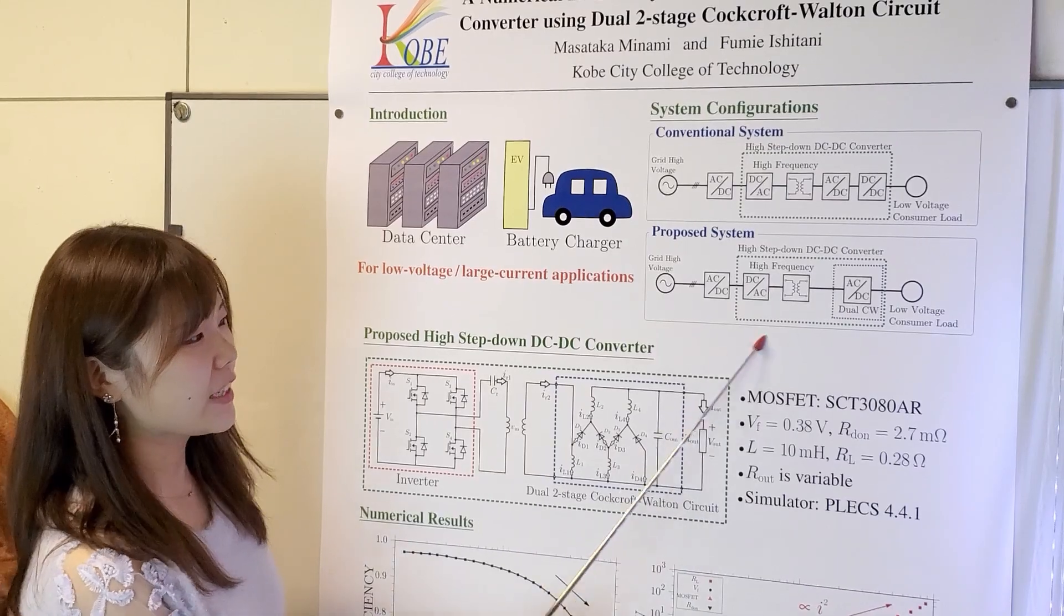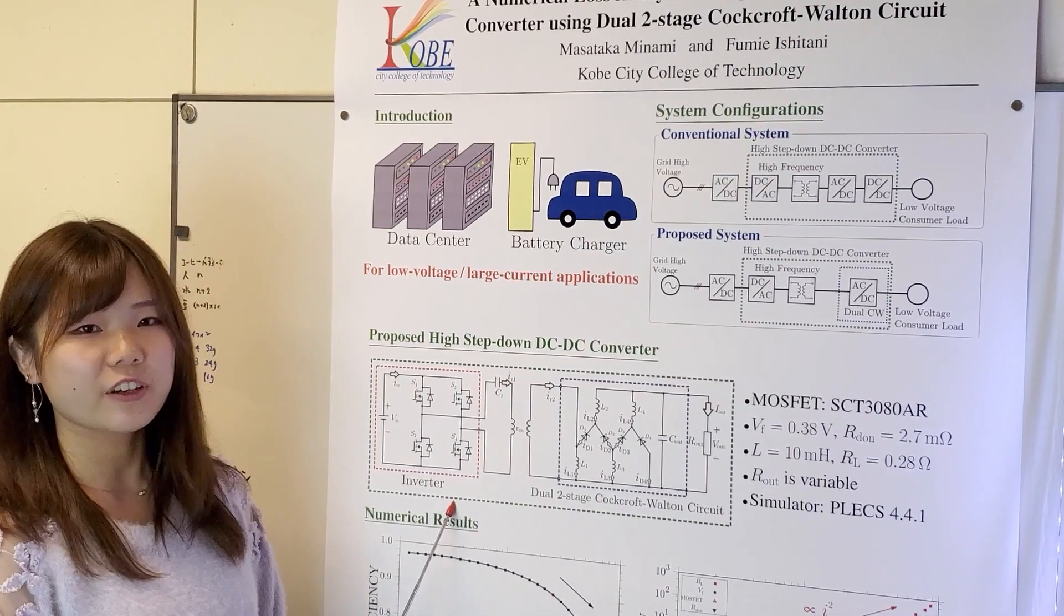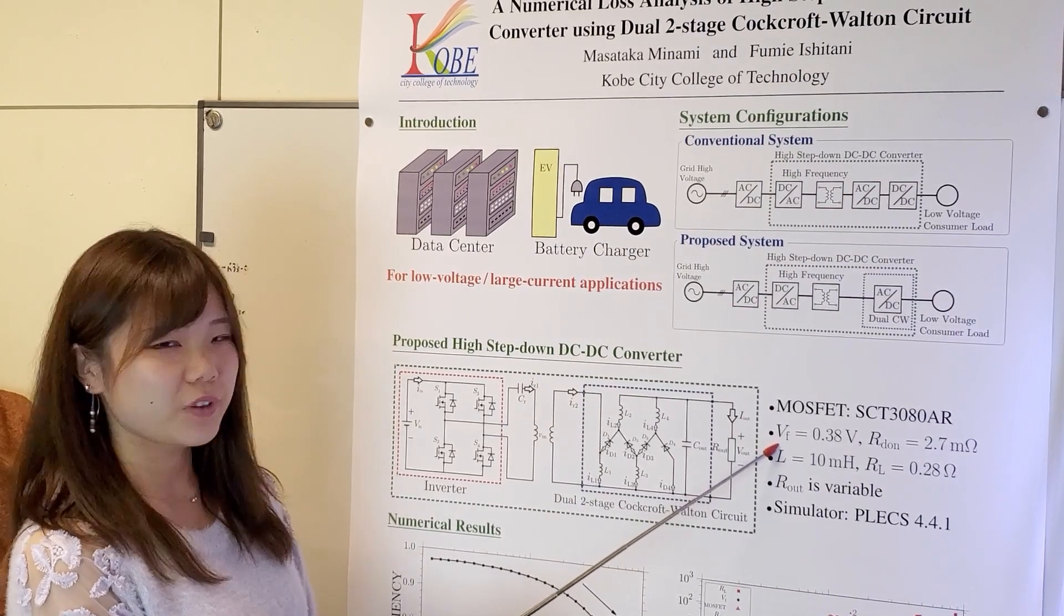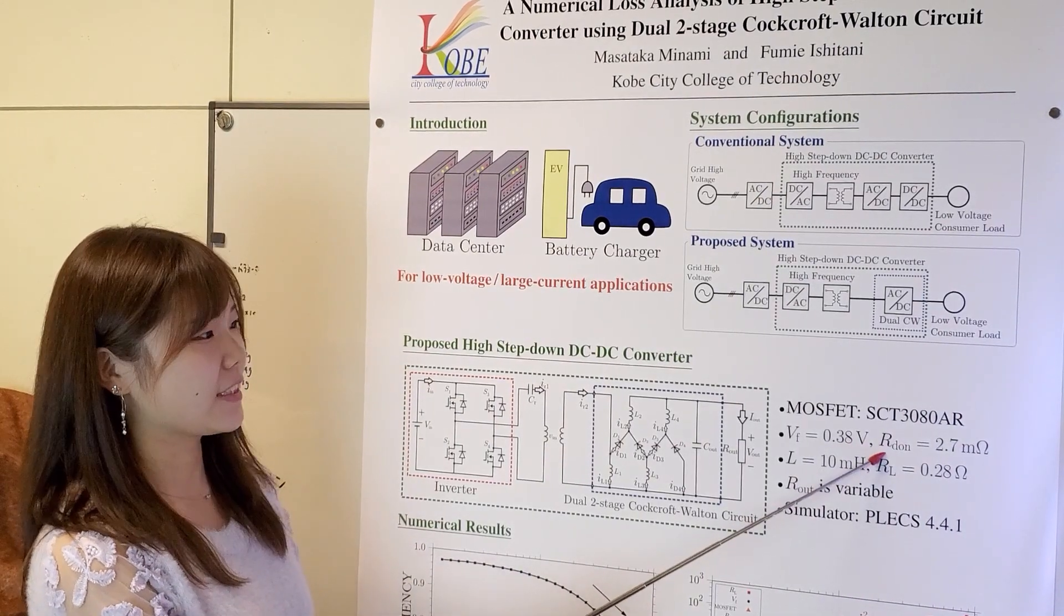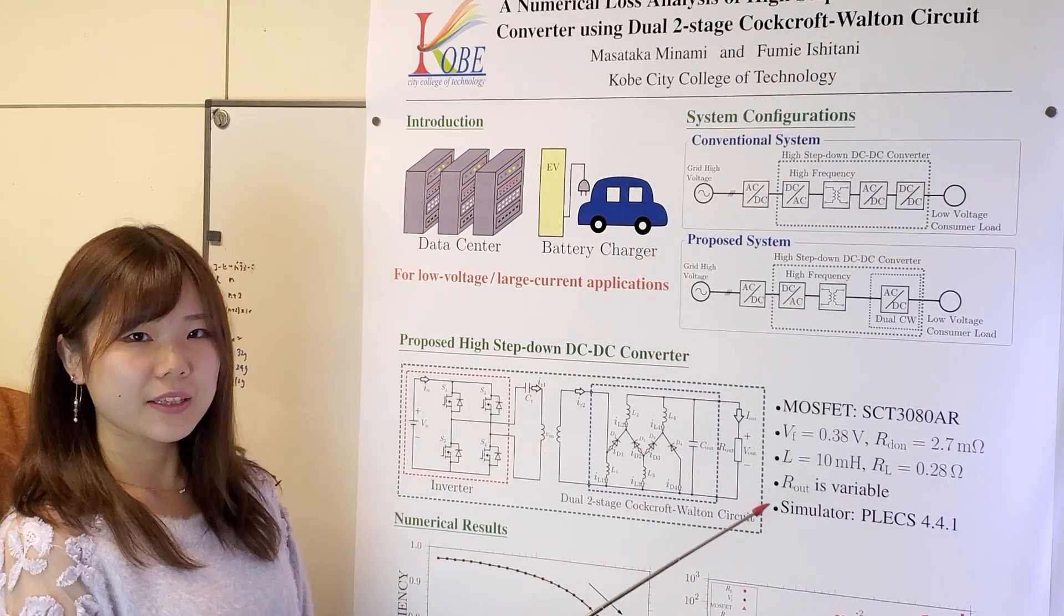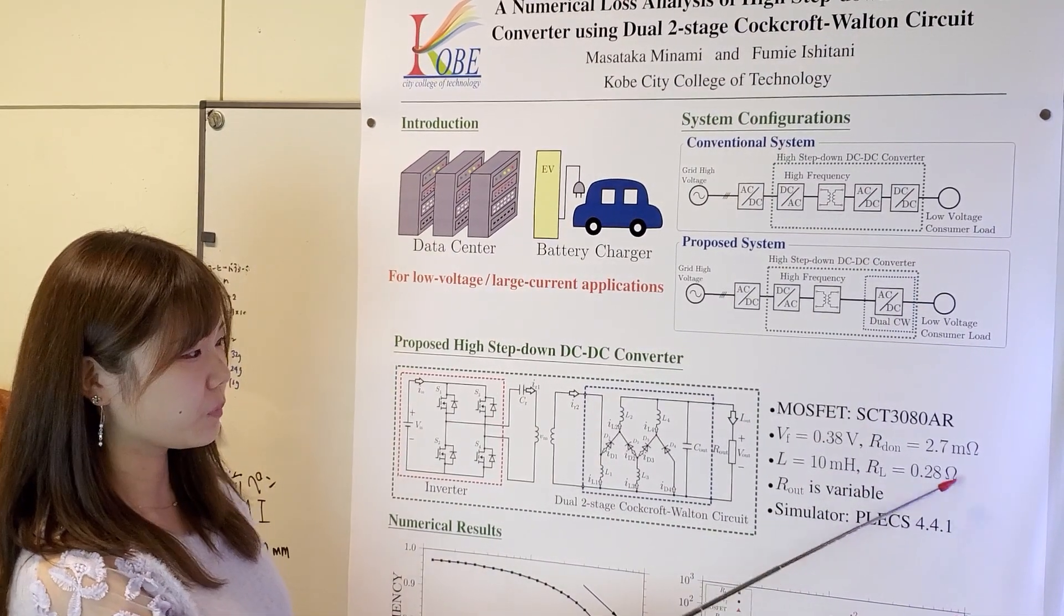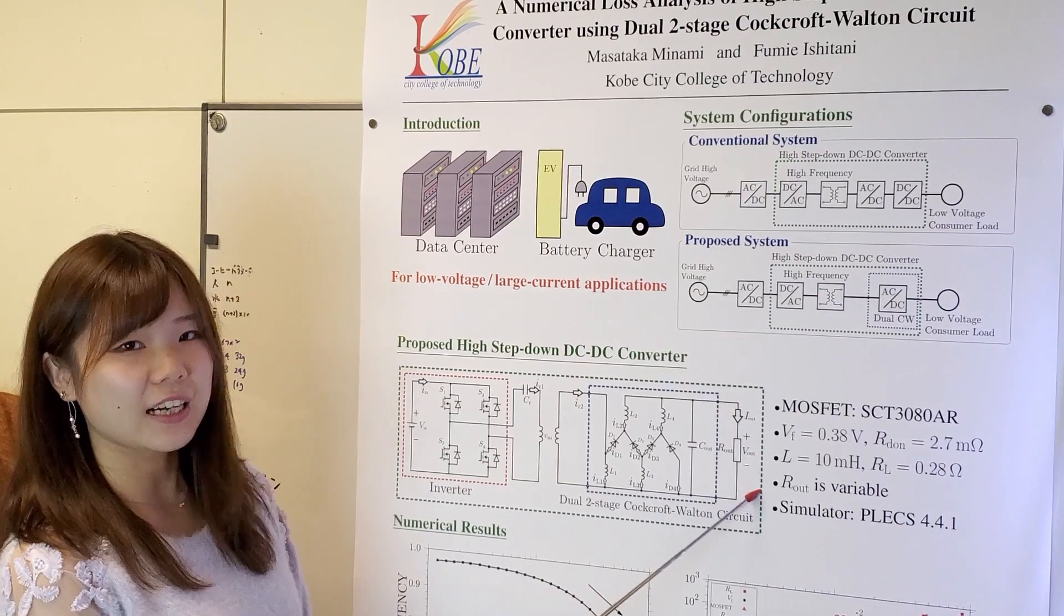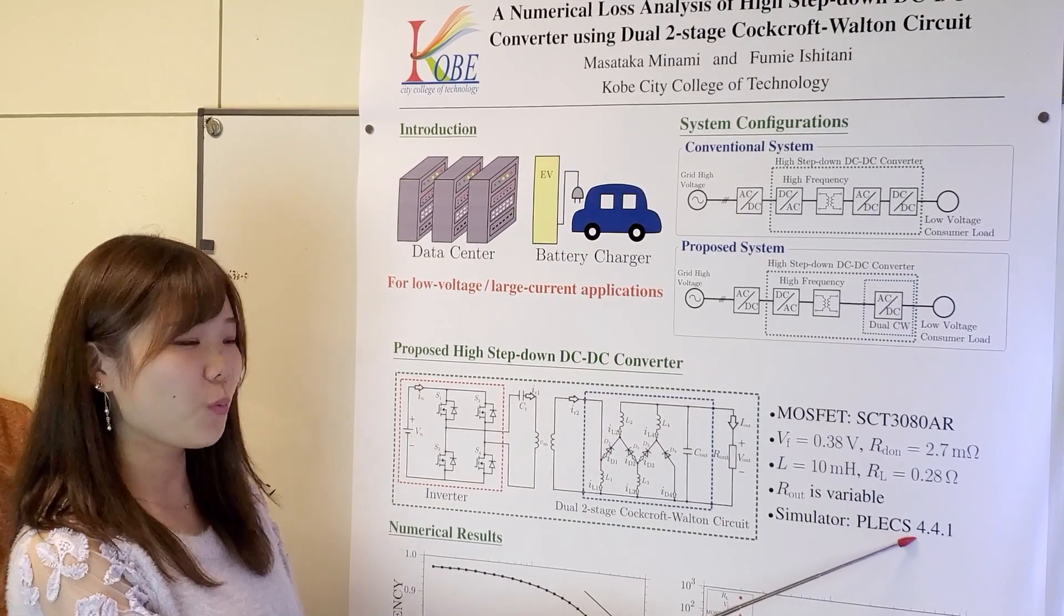Simulation condition is shown here. The diode is SCT3080AR from Rohm. VF is forward voltage of diode, 0.38V. RD-ON is on resistance of diode, 2.7 milliohms. Inductor L is 10 millihenries and its internal resistance is 0.28 ohms. We simulated by varying load RRS. Simulation software is PLECS version 4.4.1.